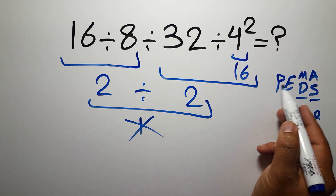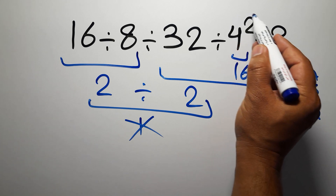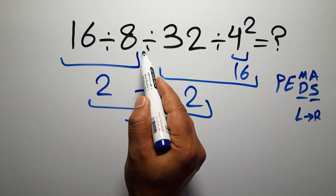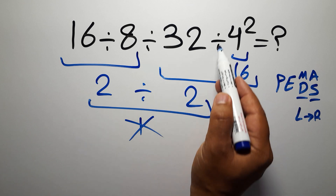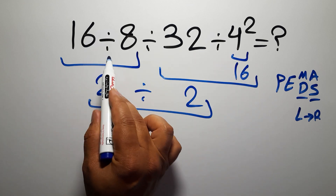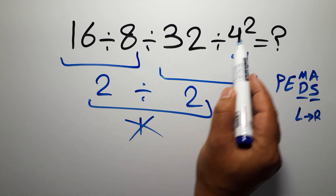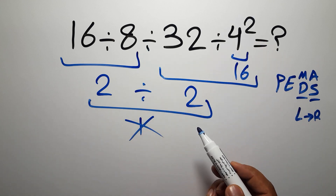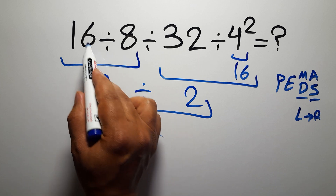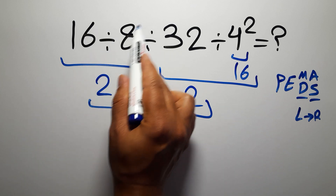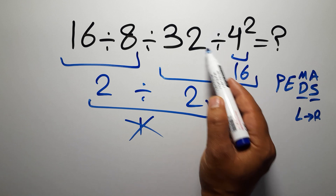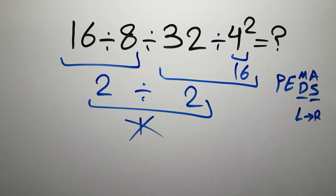According to PEMDAS, first we have to do the exponent, then this division, then this division, and finally this division. If you do a division before the exponent, it is wrong. After the exponent, we do the divisions from left to right — if you do a later division before an earlier one, that is also wrong.